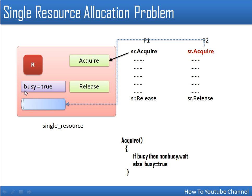When P2 tries to access the resource, busy is true (set by P1), so in the acquire procedure the condition 'if busy' is true. Therefore P2 calls non_busy.wait() and is placed inside the non_busy queue, represented as a conditional variable queue.